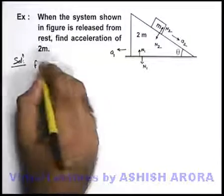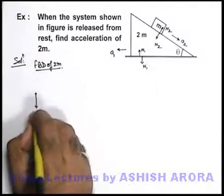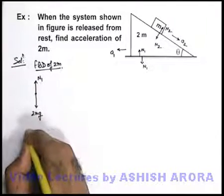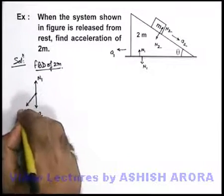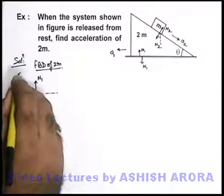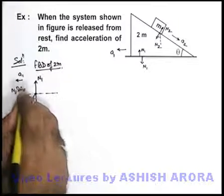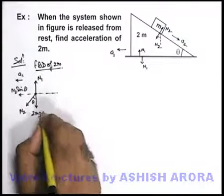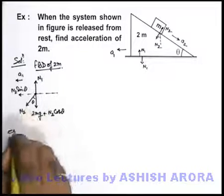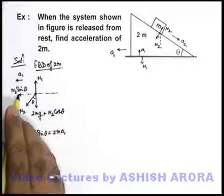Now we draw the free body diagram of both blocks and analyze. For the 2m block, one force is the gravitational force, that is its weight 2mg. Another force by the ground is the normal reaction N1 in the upward direction. Another force is N2 applied by small m onto it. If this angle is theta, N2 acts at angle theta from vertical. In the horizontal direction, it is moving toward the left with acceleration a1 due to the horizontal component of N2, which is N2 sine theta. N2 cos theta acts in the vertical direction. The equation of motion is: N2 sine theta = 2m × a1, since this is the only force causing the 2m block to accelerate.